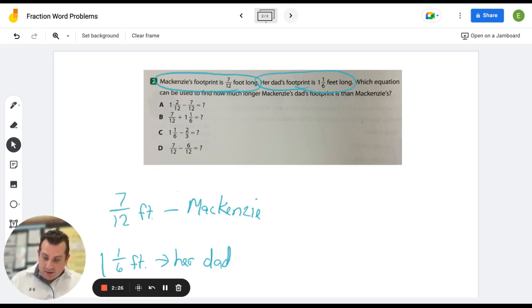So, now I'm going to underline which equation can be used to find out how much longer McKenzie's dad's footprint is than McKenzie's. So, we see it's which equation which explains why it's not asking us to solve the problem. It just wants to know which equation. So, I'm also going to box here to find out how much longer.